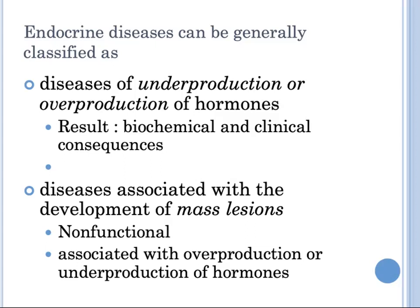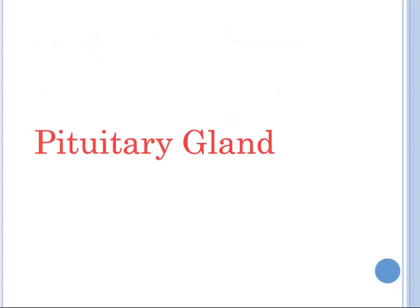Endocrine diseases can be generally classified as diseases of underproduction or overproduction of hormones and their resulting biochemical and clinical consequences, or diseases associated with the development of mass lesions. Such lesions might be non-functional or associated with overproduction or underproduction of hormones. The endocrine system consists of highly integrated and widely distributed groups of organs called glands. We now start with the pituitary gland.